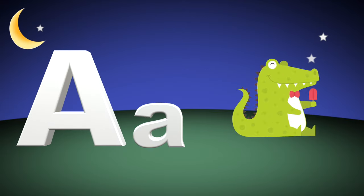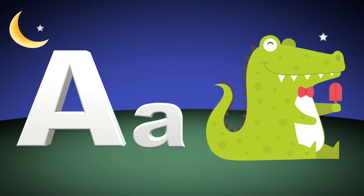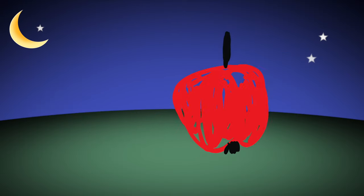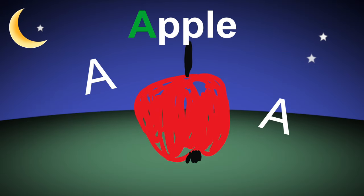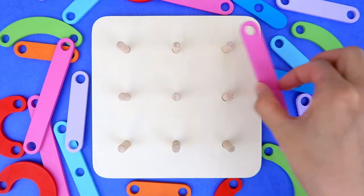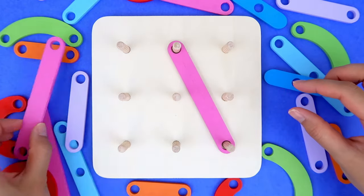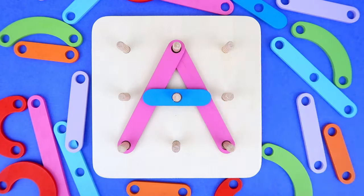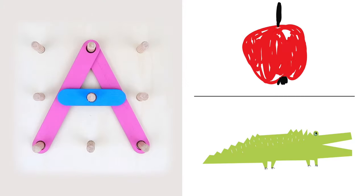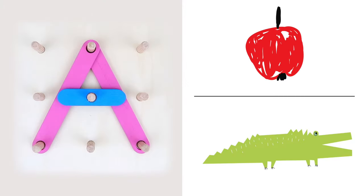A is for alligator. A is for apple. a, apple, a, alligator. Letter A: apple, alligator.